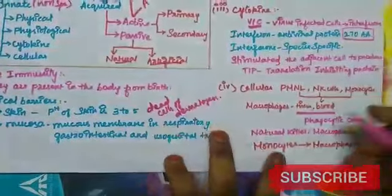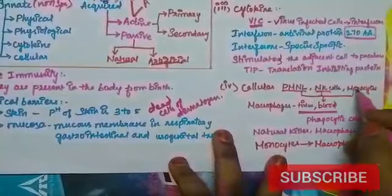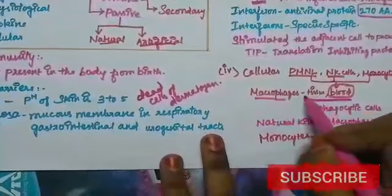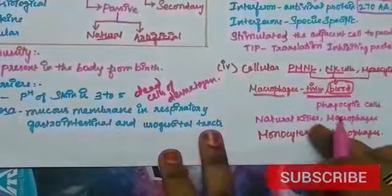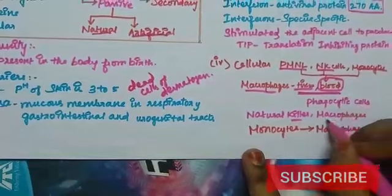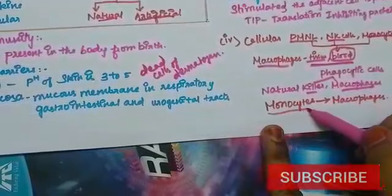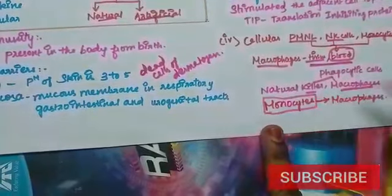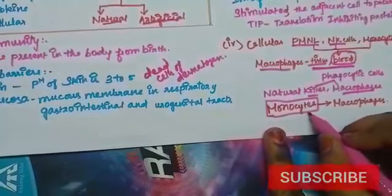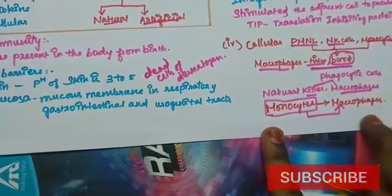Now let's look at cellular barriers. We have PMNL - polymorphonuclear leukocytes, natural killer cells, and monocytes. These constitute the blood. We have macrophages present in the tissue. These all together constitute the phagocytic cells. The important phagocytic cells are the natural killer cells and macrophages, neutrophils and macrophages. Monocytes are produced at the site of infection when pathogens enter our body. These monocytes are later converted into macrophages. Macrophages are irregularly shaped phagocytic cells.